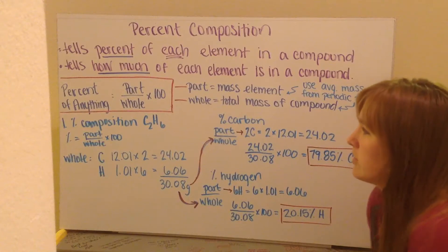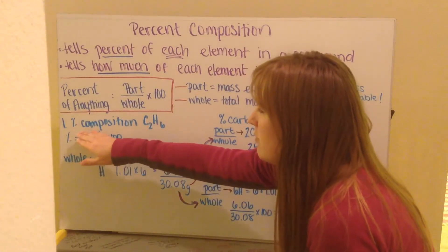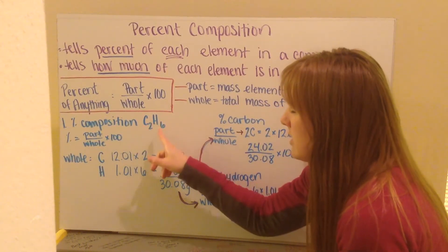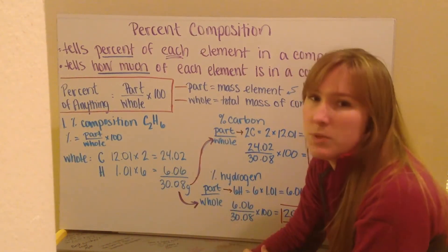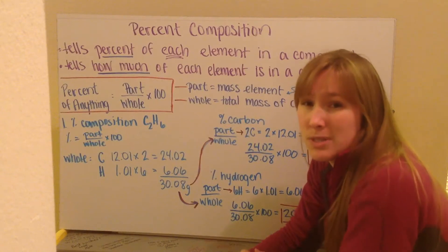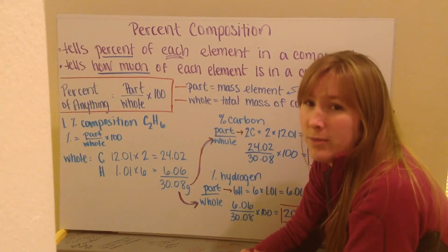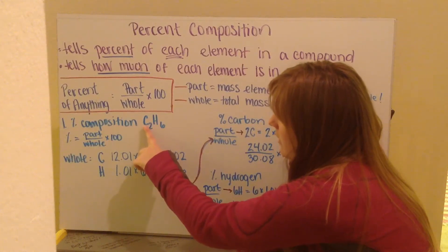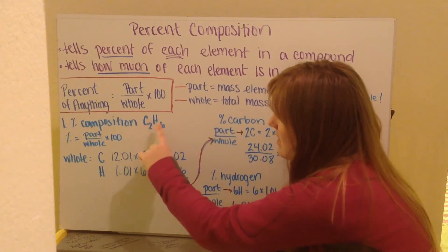Let's walk through an example. Example number one asks you to find the percent composition of C2H6. When it asks for percent composition, you need to find the percent composition of all the elements given to you. So I will find the percent composition of carbon and of hydrogen.